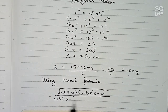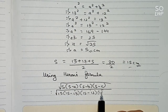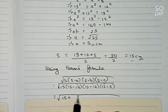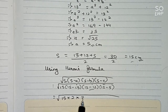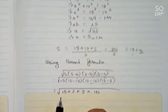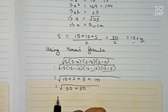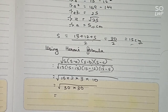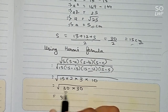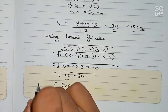We compute √(15 × (15−13) × (15−12) × (15−5)) = √(15 × 2 × 3 × 10) = √(900) = √(30 × 30). Removing the root, we get 30. So the area of the triangle is 30 centimeters squared.